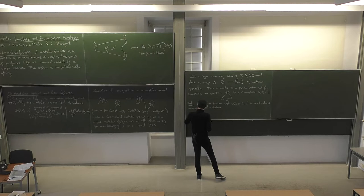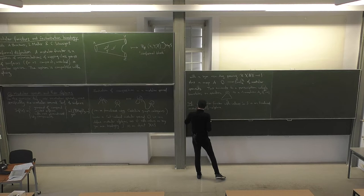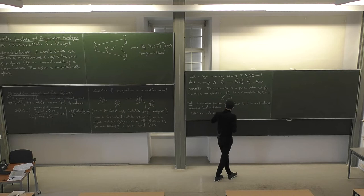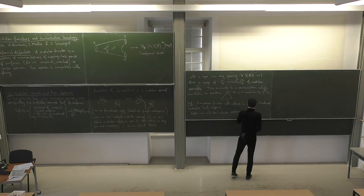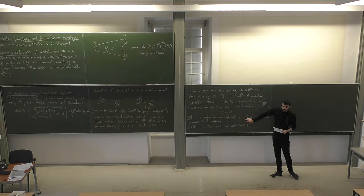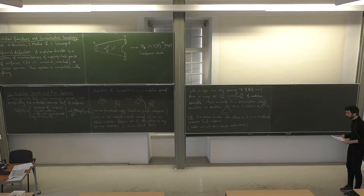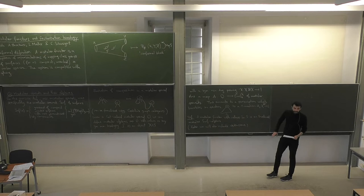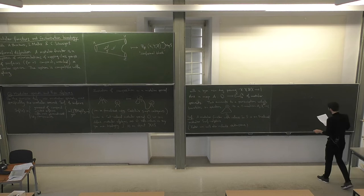Later we will also include extensions. The symmetric monoidal bi-category S should be a very specific one that makes contact with the traditional language of modular categories. The main case is S being Rex — the symmetric monoidal bi-category of finitely cocomplete linear categories over an algebraically closed field K.